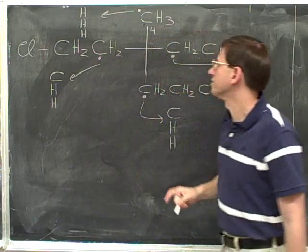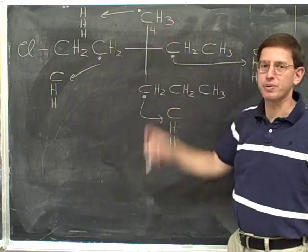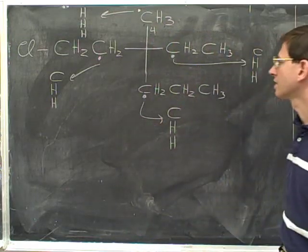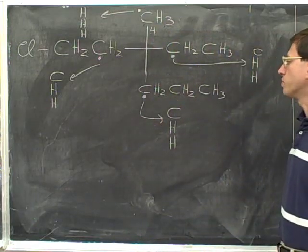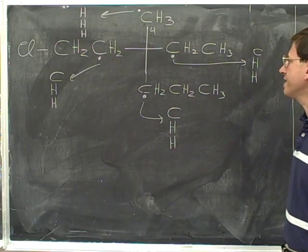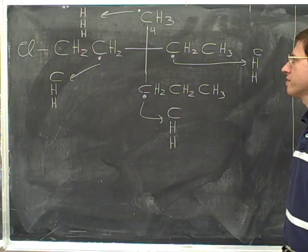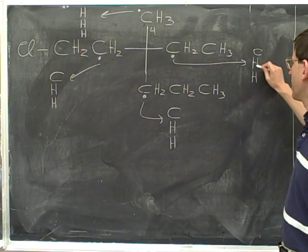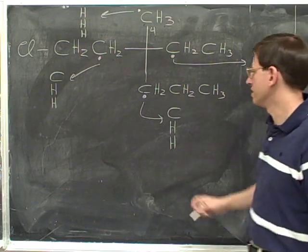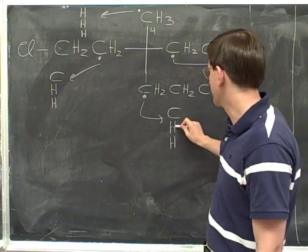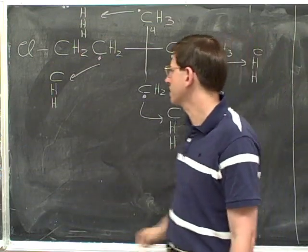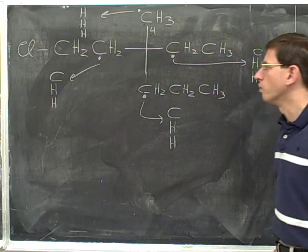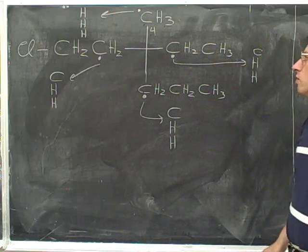We'll put a four to remind ourselves that the top is priority four. However, we are still tied between the other three substituents. On the right we have carbon, hydrogen, hydrogen. On the bottom we have carbon, hydrogen, hydrogen. And on the left we have carbon, hydrogen, hydrogen. What do we do now?